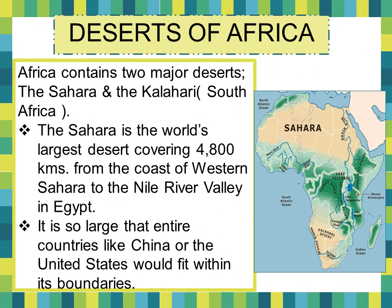The deserts of Africa: there are two major deserts. One is the Sahara Desert, which you can see in the map, and the other is the Kalahari Desert. The Kalahari Desert is found in South Africa, while the northern region of Africa has the Sahara Desert. The Sahara Desert is said to be the world's largest desert, 4,800 kilometers large, stretching from the coast of western Sahara to the Nile River Valley in Egypt.